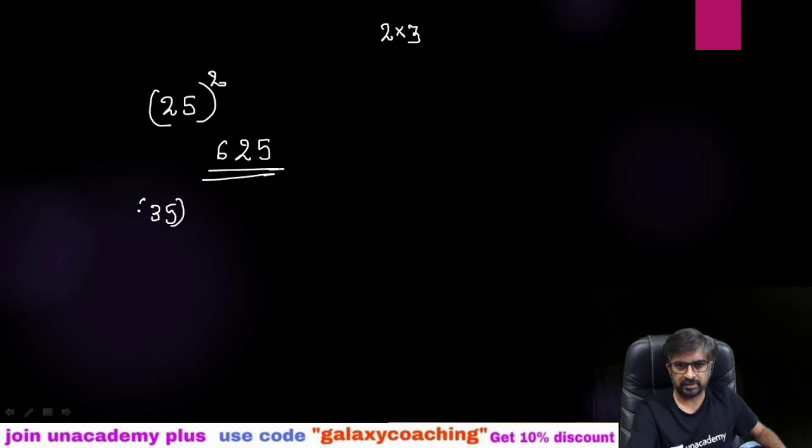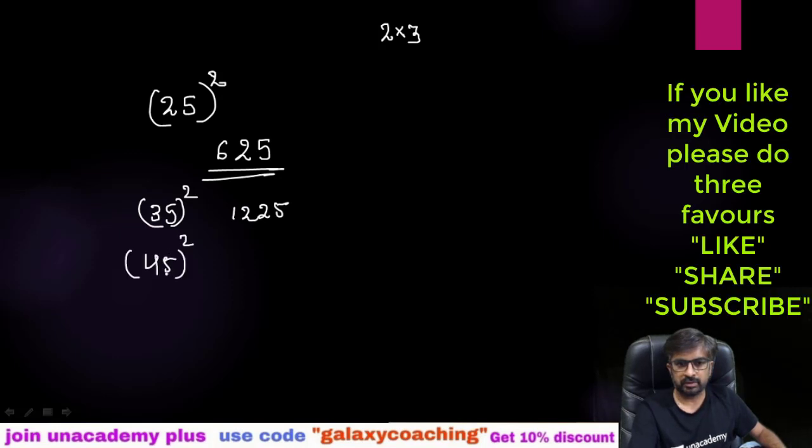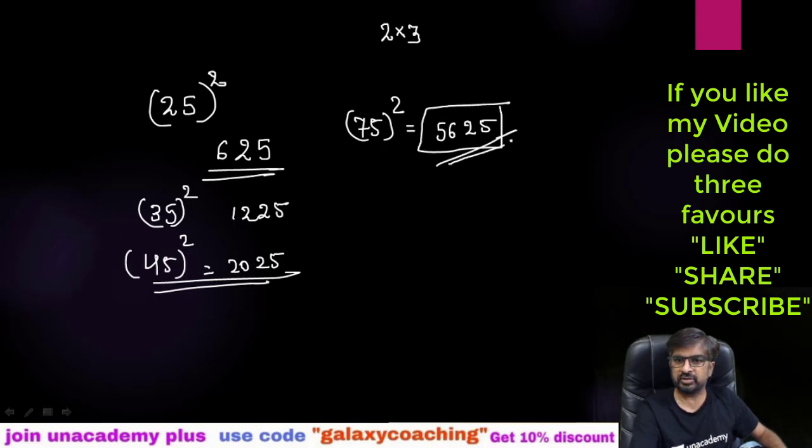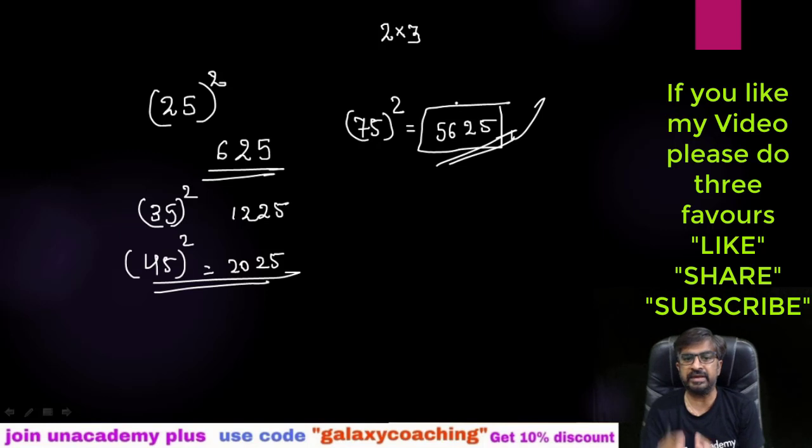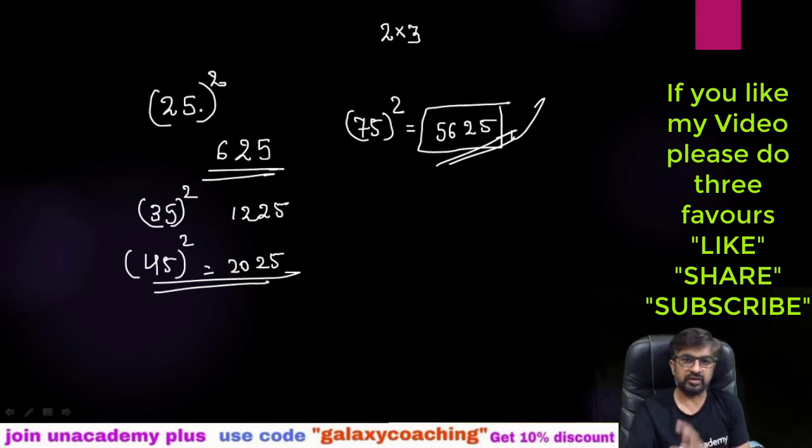This is applicable for all 2-digit numbers. Let me write down 35 square. 25 at the last, 5 square, and 3 times 4, the next consecutive number after 3 is 4, so 3 times 4 is 12. Let me do it for 45 square. 5 square 25, 4 times 5 is 20. So this is the square. Any term, 75 square, 5 square 25 and 7 times 8 is 56. This way easily, but this is applicable only for terms ending with 5.